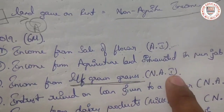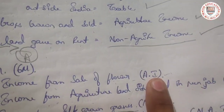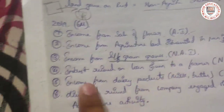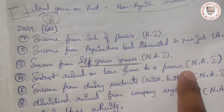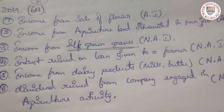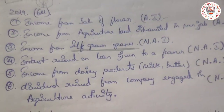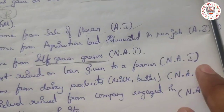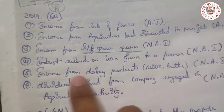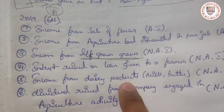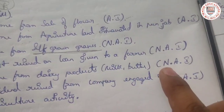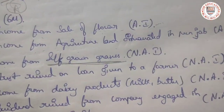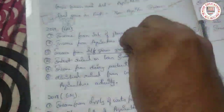Interest received on a loan given to a farmer: that is not agriculture income — it is non-agriculture income. Income from dairy products — milk, butter — that is also non-agriculture income. We are showing seeds, growing crops, and selling those crops — only then is it called agriculture income.